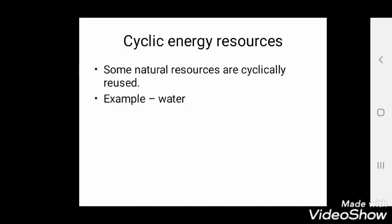You have heard about renewable and non-renewable resources, but perhaps not about cyclic energy resources. Cyclic energy resources are natural resources that are cyclically reused — the best example is the water cycle. Water is a cyclic energy resource: once we use it, we can get it back through the cycle. That covers today's lecture — we have seen depletion of mineral resources with its causes and effects, depletion of forest resources with its causes and effects, and renewable, non-renewable, and cyclic resources.